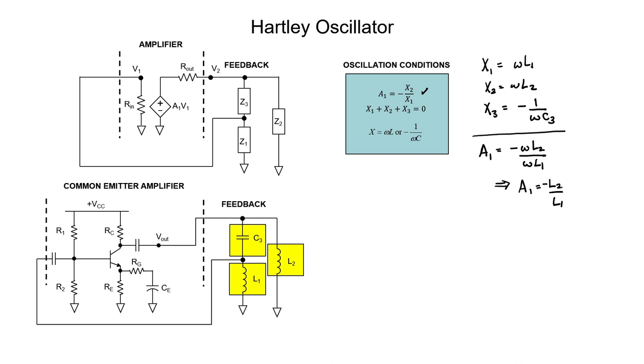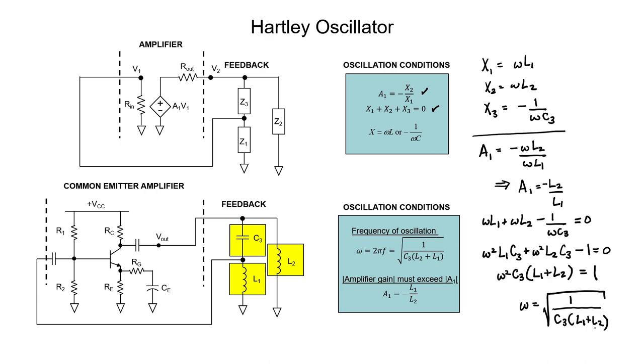I'm going to multiply every term in this equation by omega C3. The proper way then to design a Hartley oscillator would be to choose values for inductors L1 and L2 in order to satisfy the requirements on the gain and then to design the frequency of the oscillator by tuning capacitor C3.